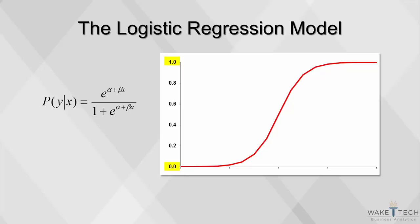There are lots of s-shaped curves, but the logistic regression model is what we'll use in this instance. The logistic function is a nonlinear function of independent variables. However, we can convert this nonlinear function into a linear relationship using the log of the odds ratio.